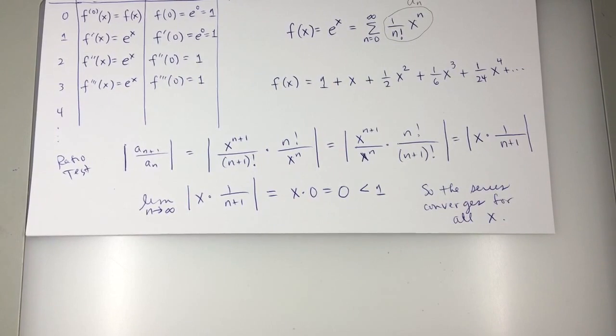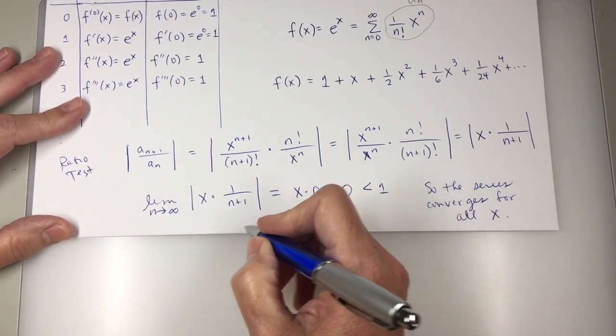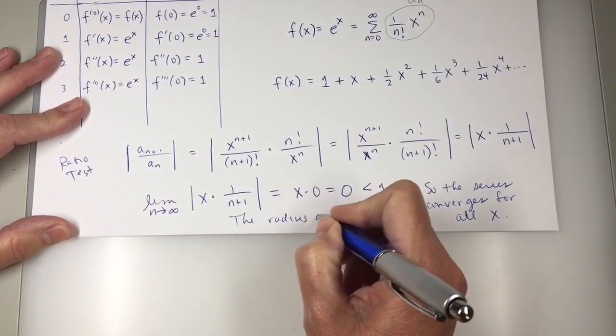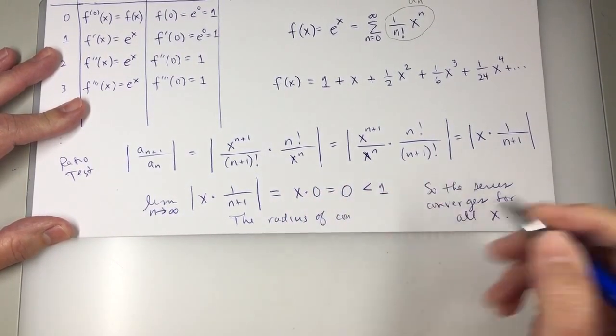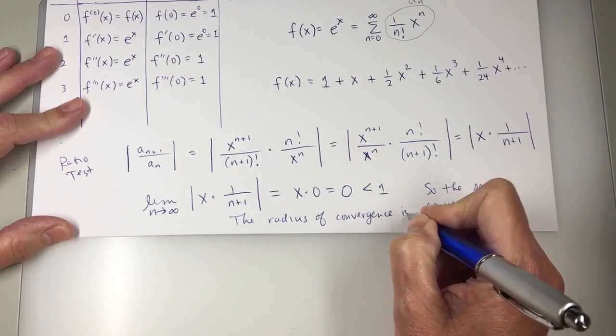Because whatever number you put in there for x, that times 0 is going to be 0. So it converges for all x. The radius of convergence is infinity. Is that because it converges for all x? Yes.